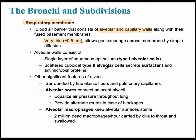The alveoli contain two different cell types. Type 1 alveolar cells are made of simple squamous epithelium. Type 2 alveolar cells are scattered, less numerous, cuboidal in structure, and they secrete surfactant — a detergent-like molecule that helps reduce surface tension. The alveolar pores connect adjacent alveoli to equalize air pressure throughout the lungs. There are also alveolar macrophages, which help kill bacteria or microbes in the vicinity.